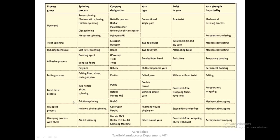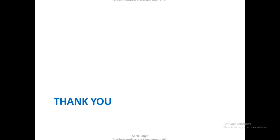Returning to the classification chart: we have completed the false twist process. DREF 3 is an extension of DREF 2, which was an open-end spinning process, but it is regrouped under false twist because the drum acts like a false twister for the core fibres. Although it uses friction spinning, it falls under the false twist process. The commercial name is DREF 3 and it produces a bundled single yarn — core twist-free with wrapping fibres having twist. Yarn strength is imparted by the perforated drums through a mechanical twisting or wrapping process.